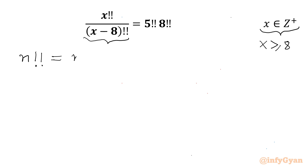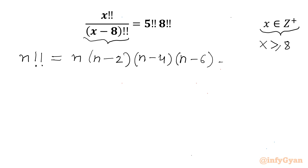What does it mean? It is n times n minus 2, times n minus 4, times n minus 6, and so on. We will stop at 1.